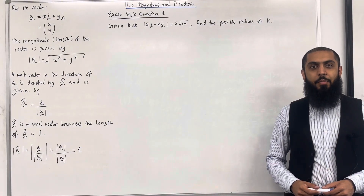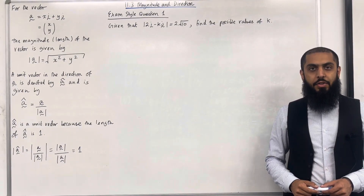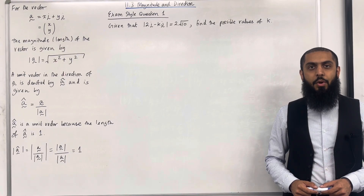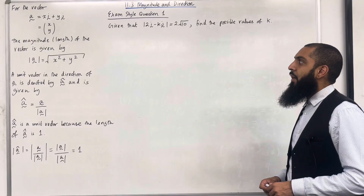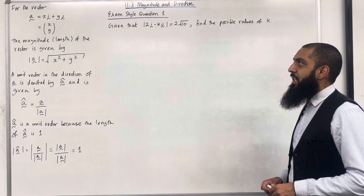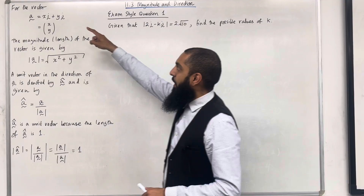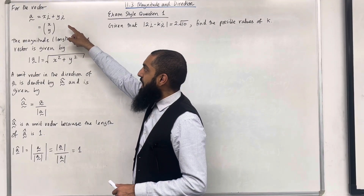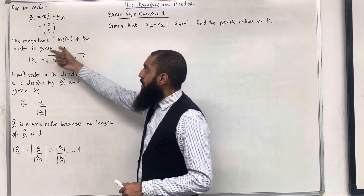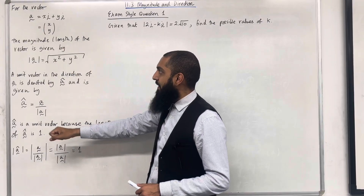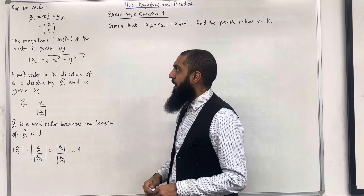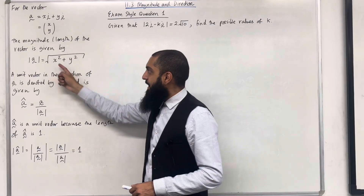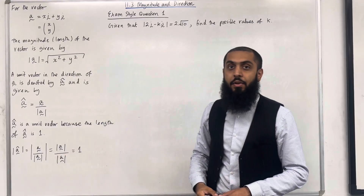Welcome back. In this teaching video I'll be looking at 11.3 magnitude and direction. 11.3 represents chapter 11, section 3 of the Pearson A-level maths, pure maths year 1, textbook. For the vector A, which can be represented in IJ notation as xi plus yj, or as a column vector xy, the magnitude — or the length of the vector — is given by |A| = √(x² + y²). This is obtained from the Pythagorean theorem.